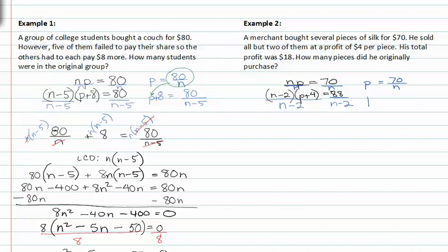Once again we're going to divide by the n binomial here. So we're going to get p plus four is equal to eighty-eight divided by n minus two. Substituting this in for p in the second equation,